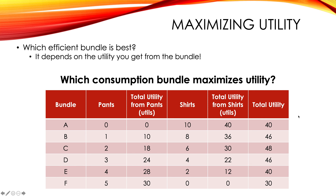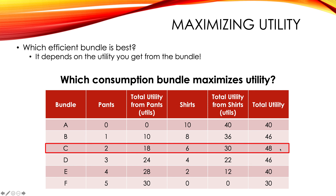To answer the question: which consumption bundle maximizes utility? All you have to do is look at your total utility column and hunt for the biggest number, which is clearly 48 right there. So bundle C is the best bundle for this person to purchase. Even though A, D, and F are all efficient just like bundle C, bundle C gives this consumer the most utility. This is the affordable option that maximizes utility. That's how it works with utility and budget constraints. Thanks for watching.